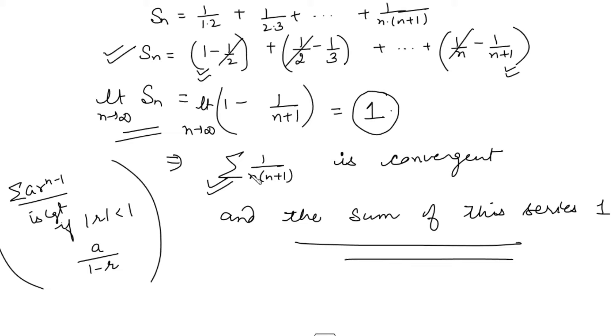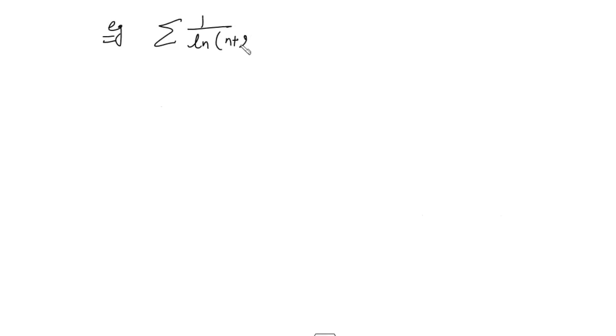Let's see one more example related to telescoping series. Find the sum of the series ∑ [1/ln(n+2) − 1/ln(n+1)] where n varies from 1 to infinity.